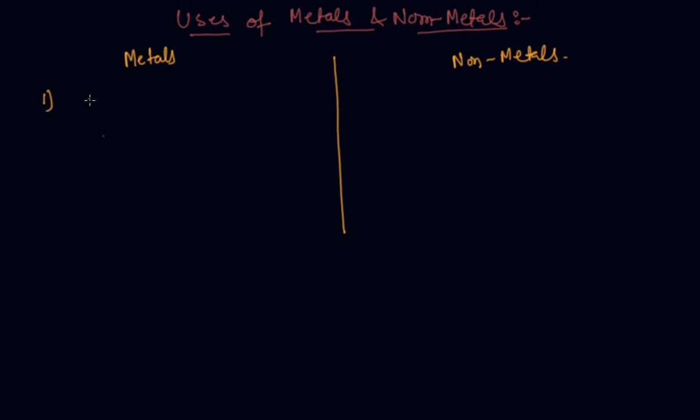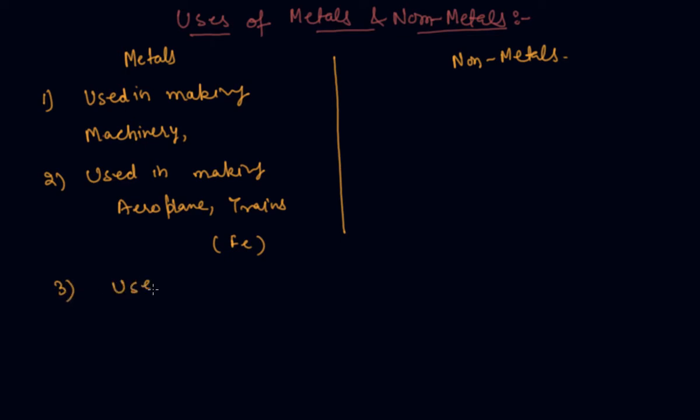Metals are used in making machinery, used in making aeroplanes and trains. Most metals like iron (Fe) are used in making cooking utensils and water boilers, for which aluminum is used.